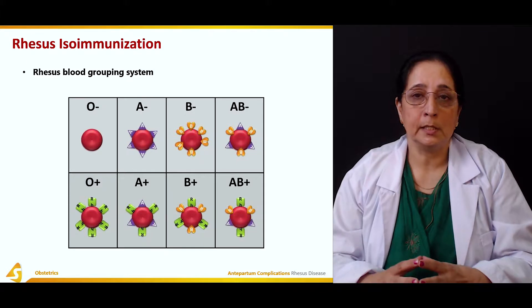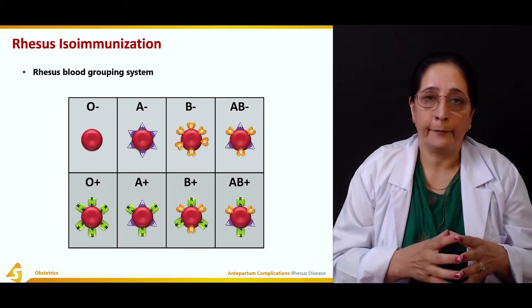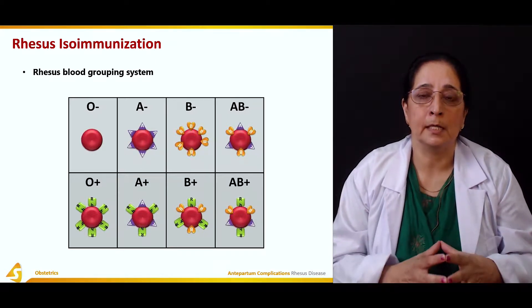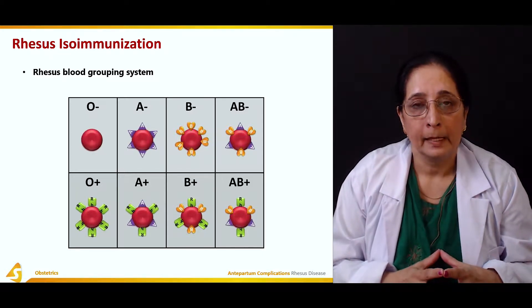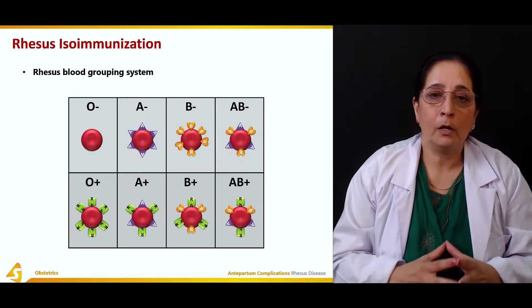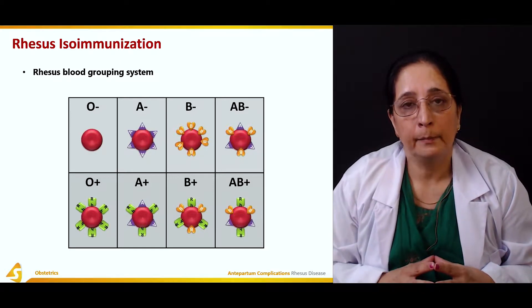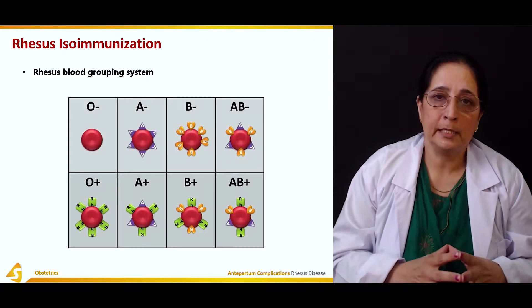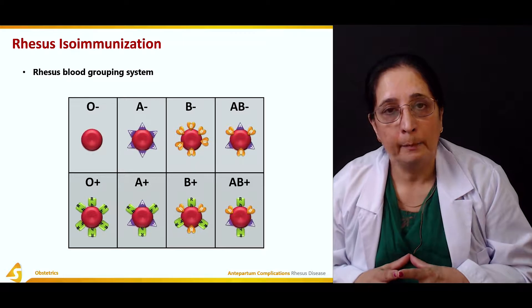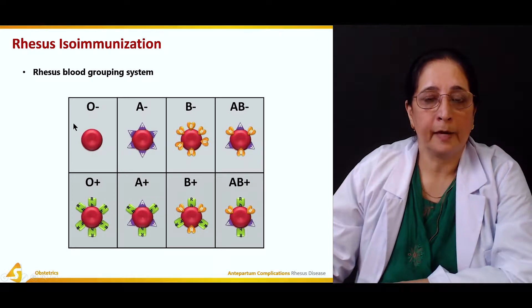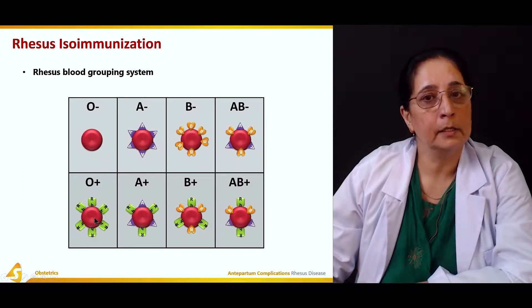Blood group A positive has the Rh factor present on the wall of the red blood cells. A negative individuals have no Rh factor on the wall of their red blood cells. O negative blood has no Rh factors present, while O positive has the Rh factor present on the red blood cell.